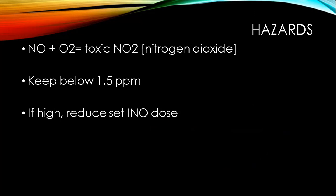If you mix nitric oxide with oxygen in the ventilator system, it creates a toxic gas called nitrogen dioxide (NO2), which can cause airway injury. This is not usually a problem because nitric oxide and O2 need a lot of time to produce nitrogen dioxide. Nitrogen dioxide is one of the three things monitored through the sample line. To keep levels safe, you want to keep them less than 1.5 ppm. If you get a high reading above 1.5, you can decrease the INO dose until it drops below toxic levels.